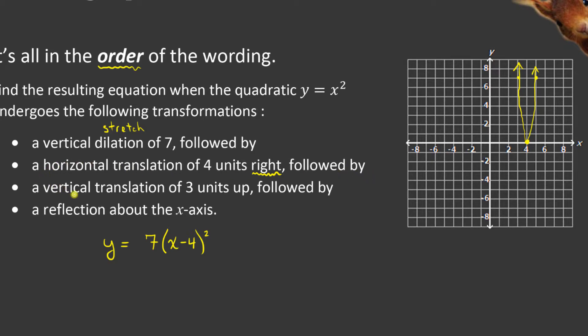So the next thing is a vertical translation of 3 units up. So we're going to move our whole entire parabola up by 3, which is a k value of plus 3. So we take our parabola and we shift the whole thing up 3. So the vertex moved up by 3, the points that I have moved up by 3, and the entire parabola is moved up by 3.